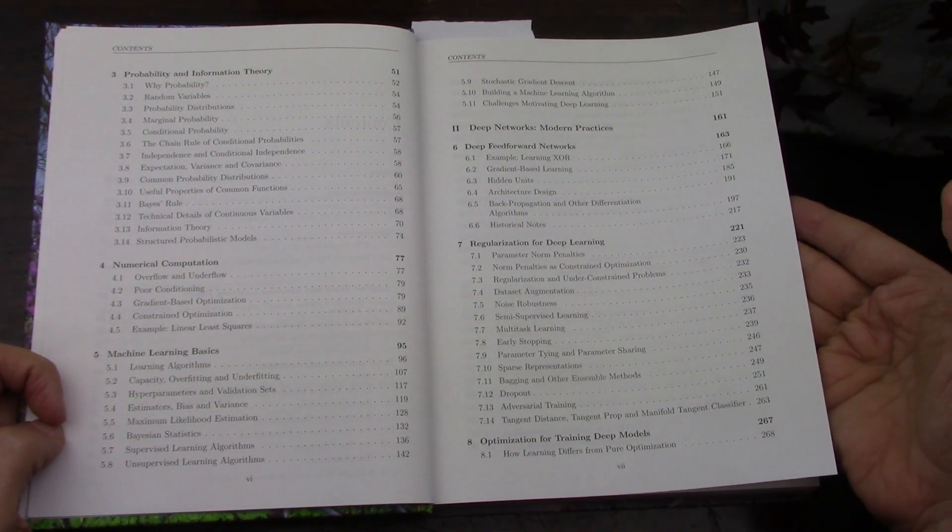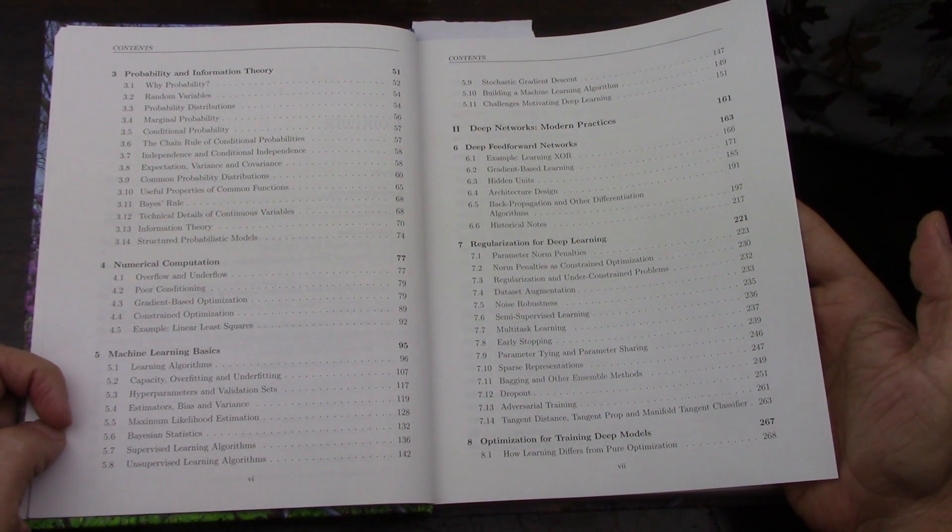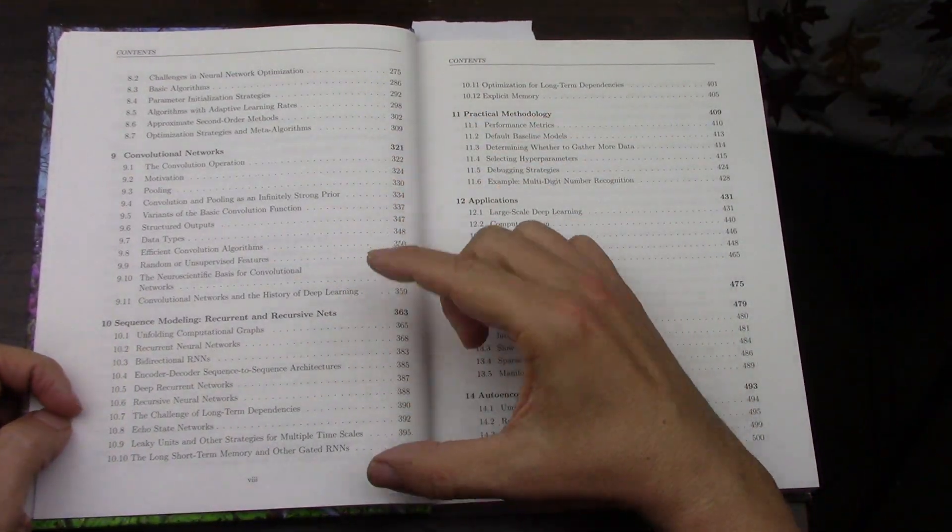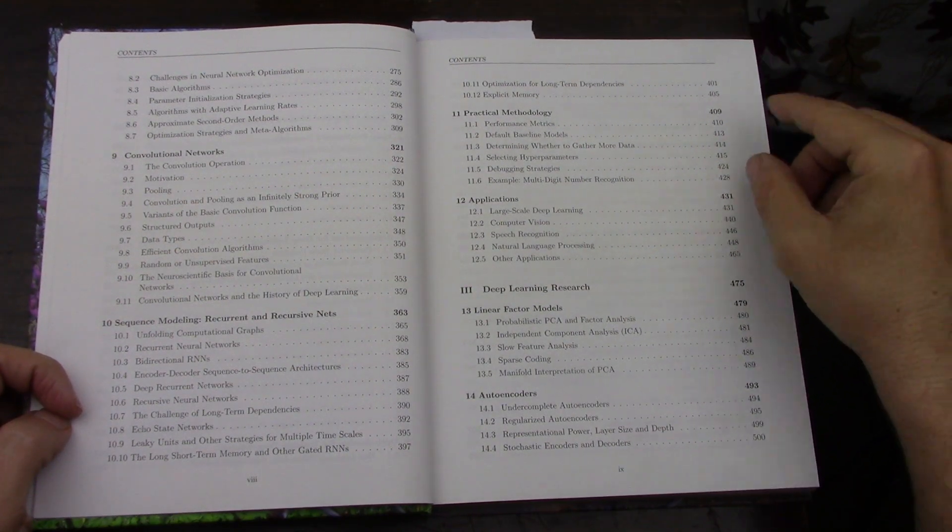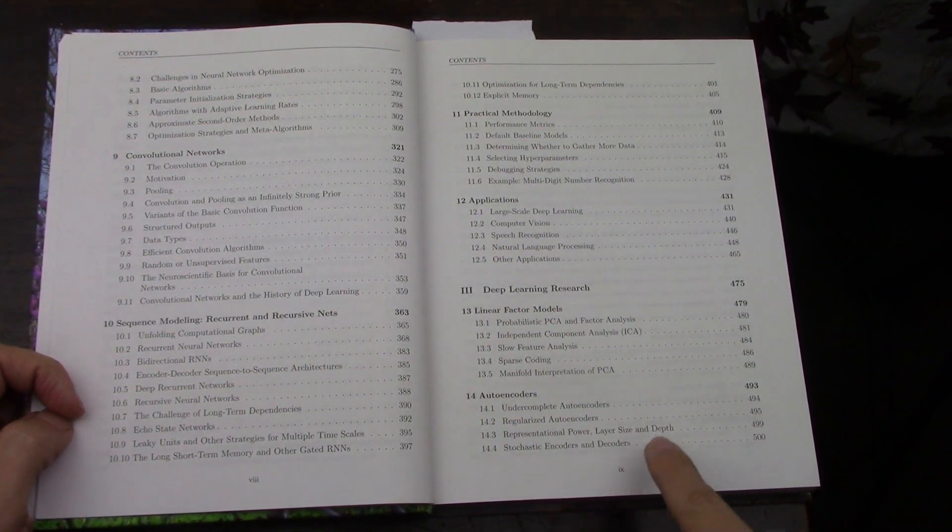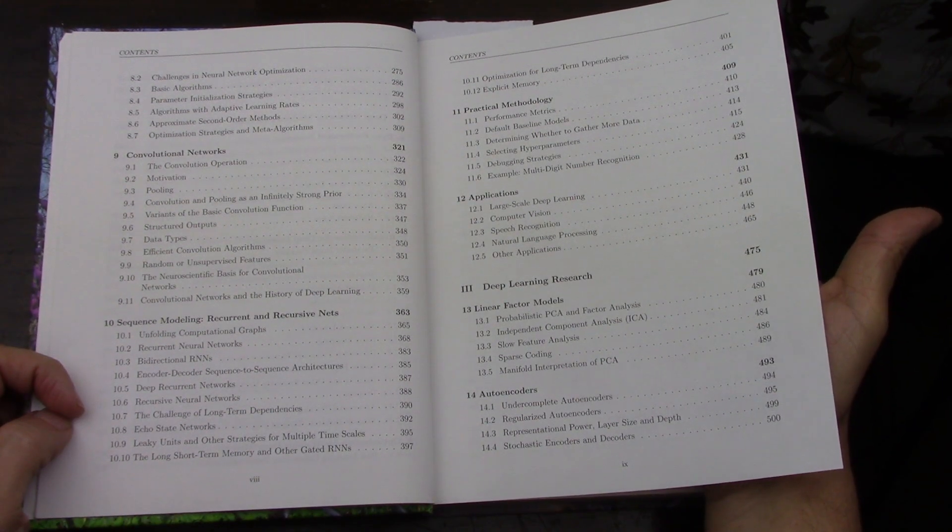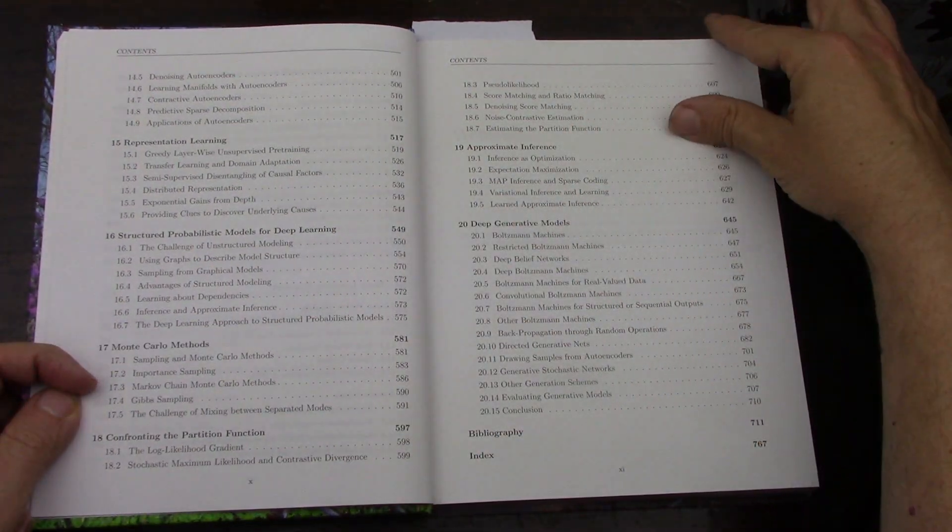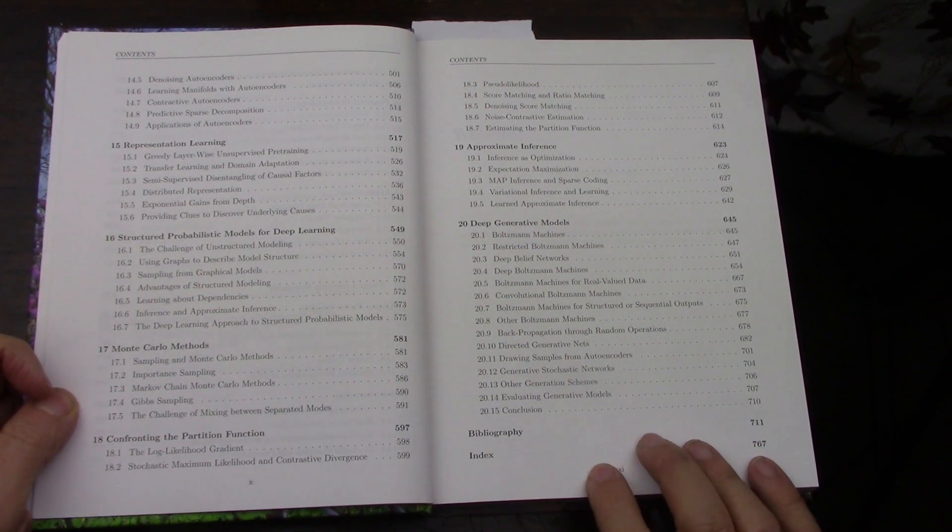Regularization, deep feedforward networks, optimization, training models, convolutional networks, how to work with the model, some applications, then the deep learning research, which includes some things that I don't think have panned out completely yet from what I'm reading in the book, but again I have to read more. Just a lot of really good stuff for deep learning.